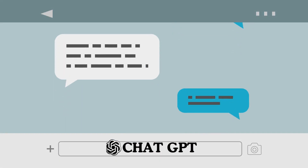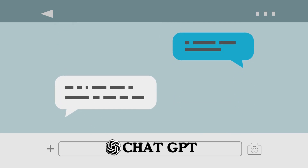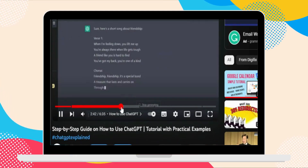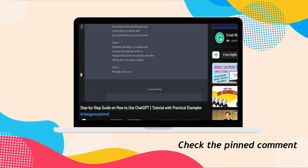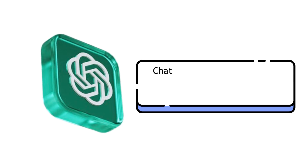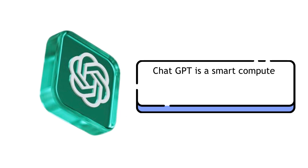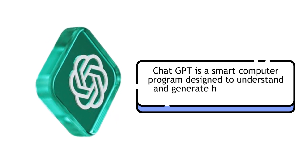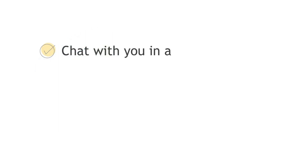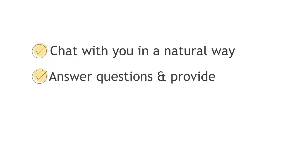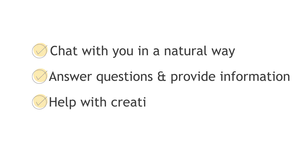Since ChatGPT was a trending topic recently, I am pretty sure you are familiar with this new AI too. If not, don't worry — check out our guide to ChatGPT using the link in the pinned comment. ChatGPT is a smart computer program designed to understand and generate human-like text based on the input it receives. It can chat with you in a natural way, answer questions, provide information, or even help with creative writing tasks. Let's see how you can use ChatGPT as an English teacher.